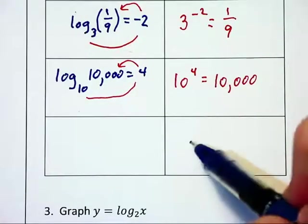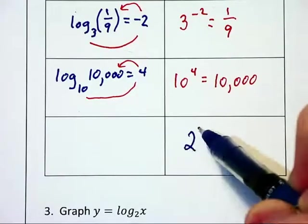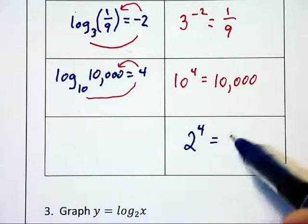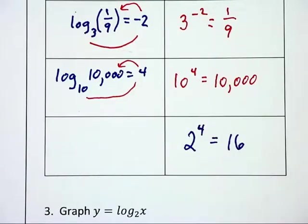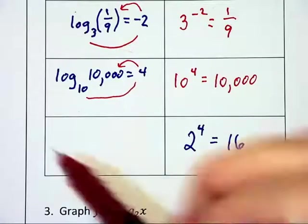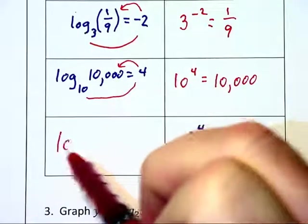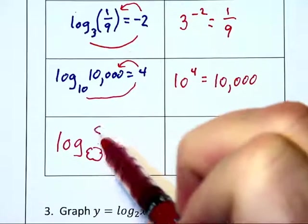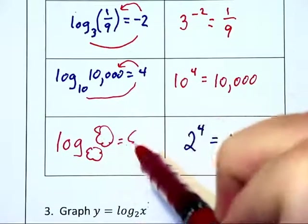Now let's say instead I've got 2 to the fourth is equal to 16. Now we have to kind of go backwards and train our brain a little bit somehow. What I like to do is the following.